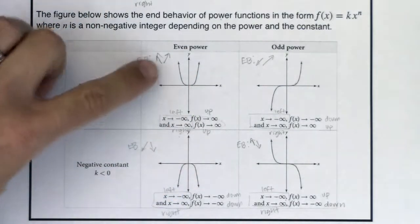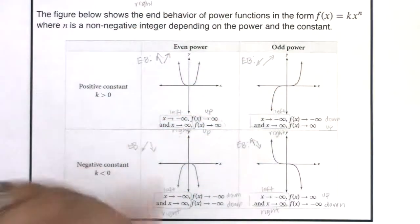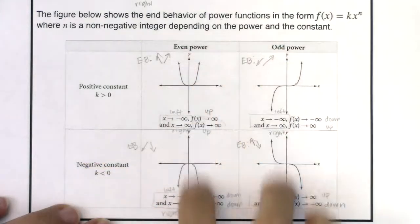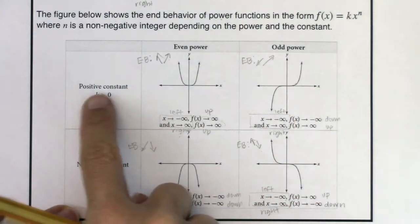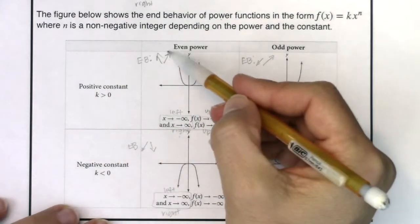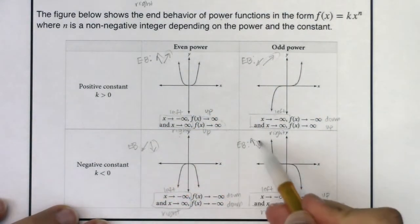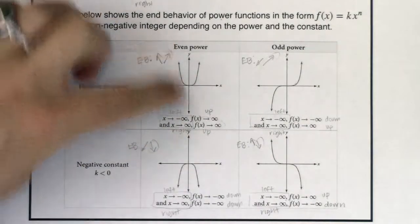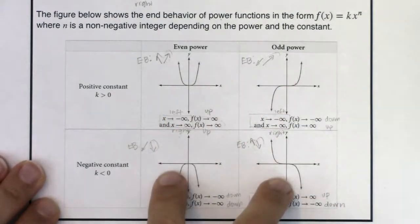When there are even powers, your arrows go the same direction — either both up or both down. With odd powers, they go in opposite directions. Another pattern: for a positive constant, the right end is always up. For a negative constant, the right end is always down. So you can categorize by even versus odd, or by positive versus negative constant.